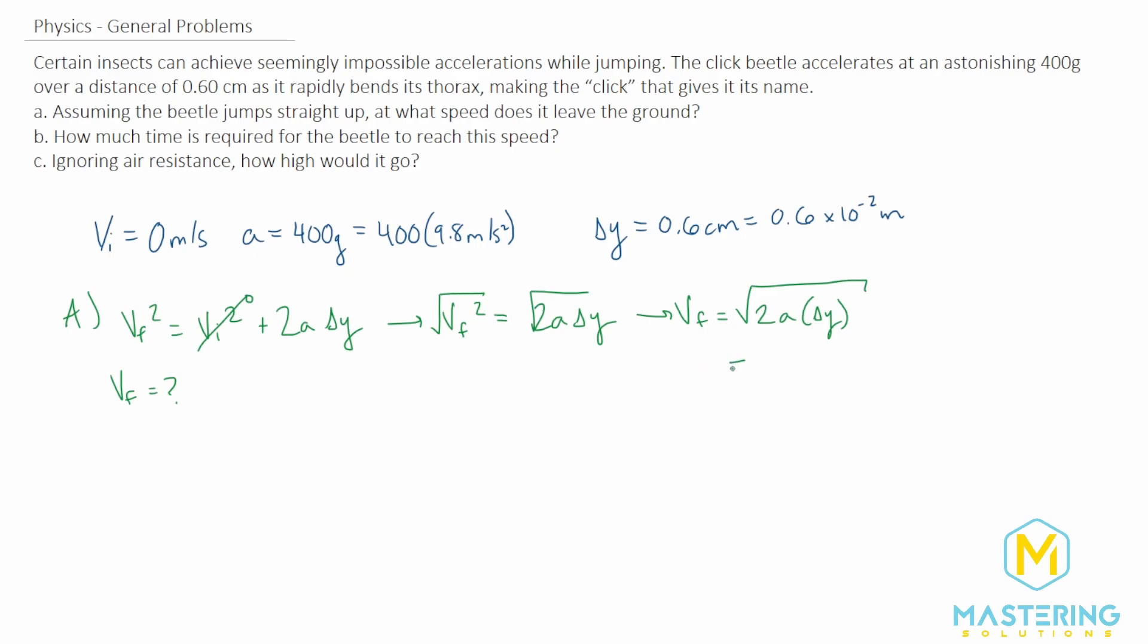So now when we plug our values into that, we have 2 times the acceleration, and the acceleration in this case is given as 400 times 9.8 meters per second squared. And then we'll multiply that by the change in the y, which is of course 0.6 times 10 to the negative 2 meters.